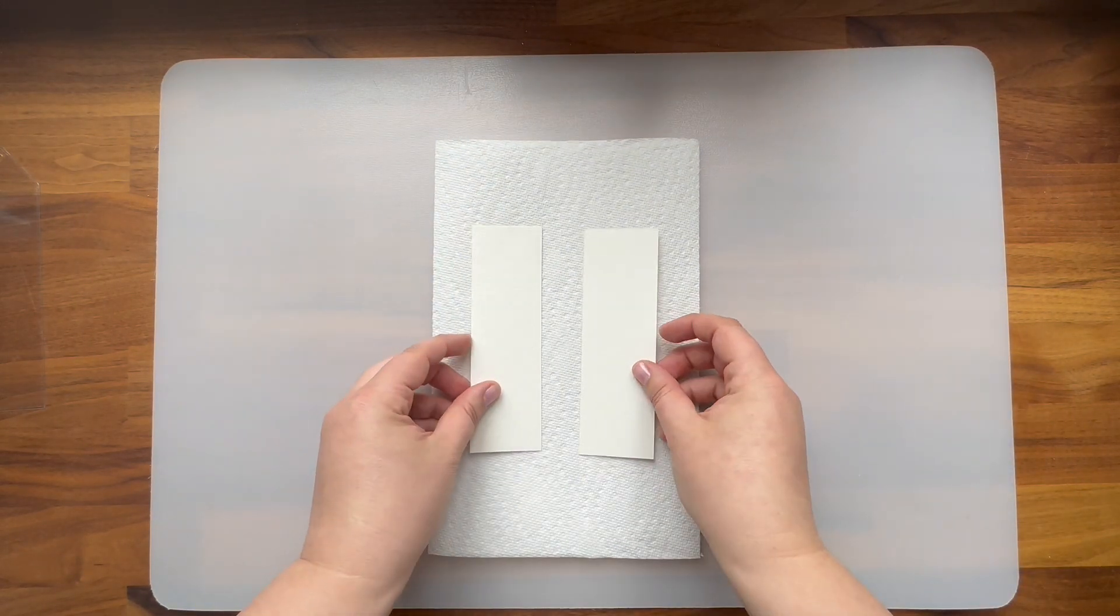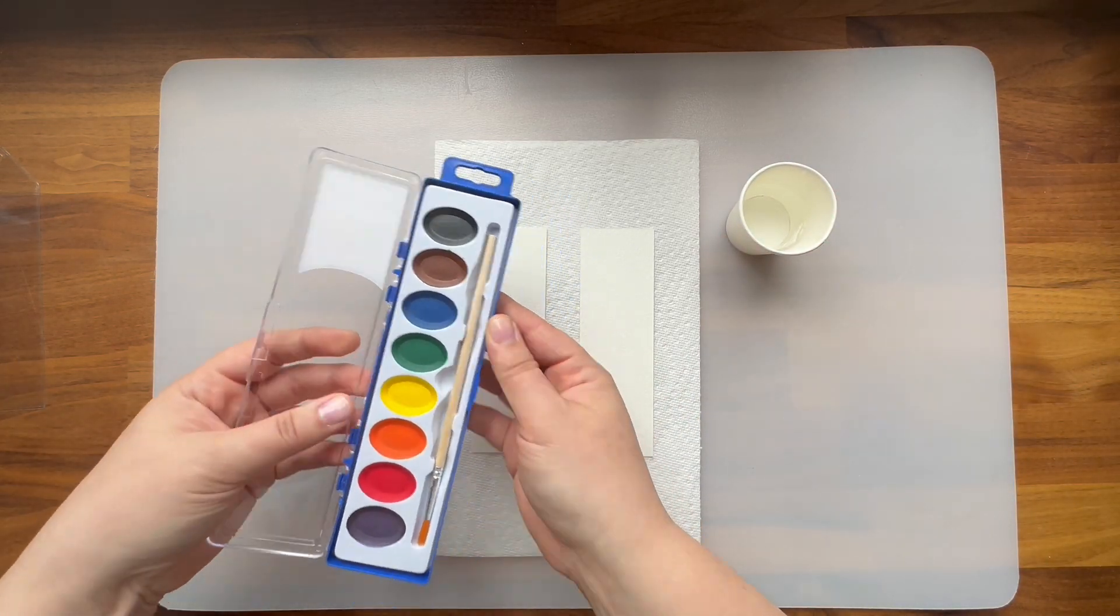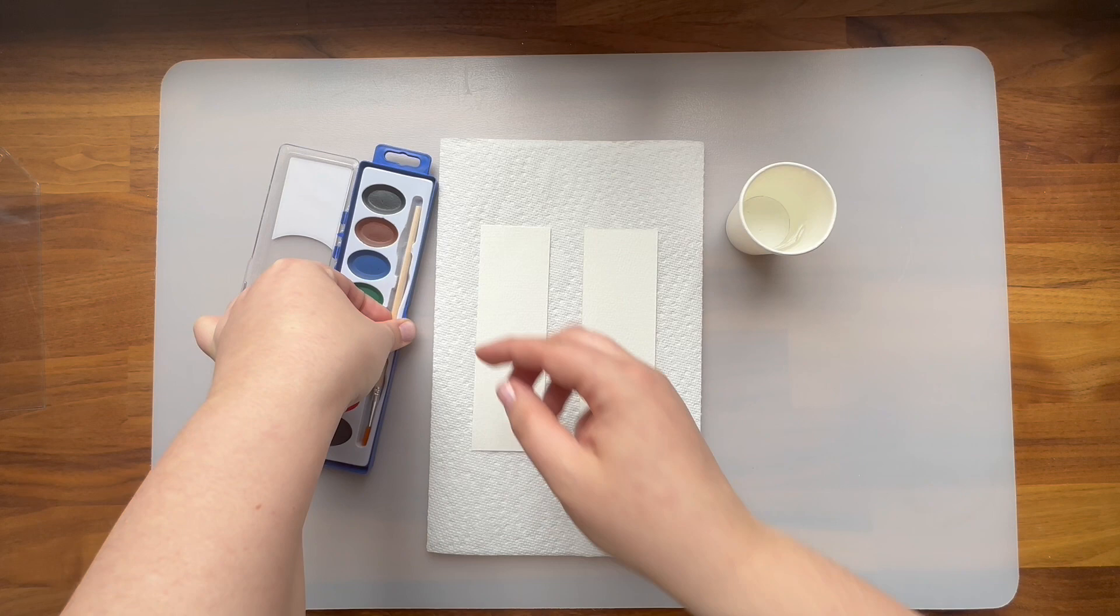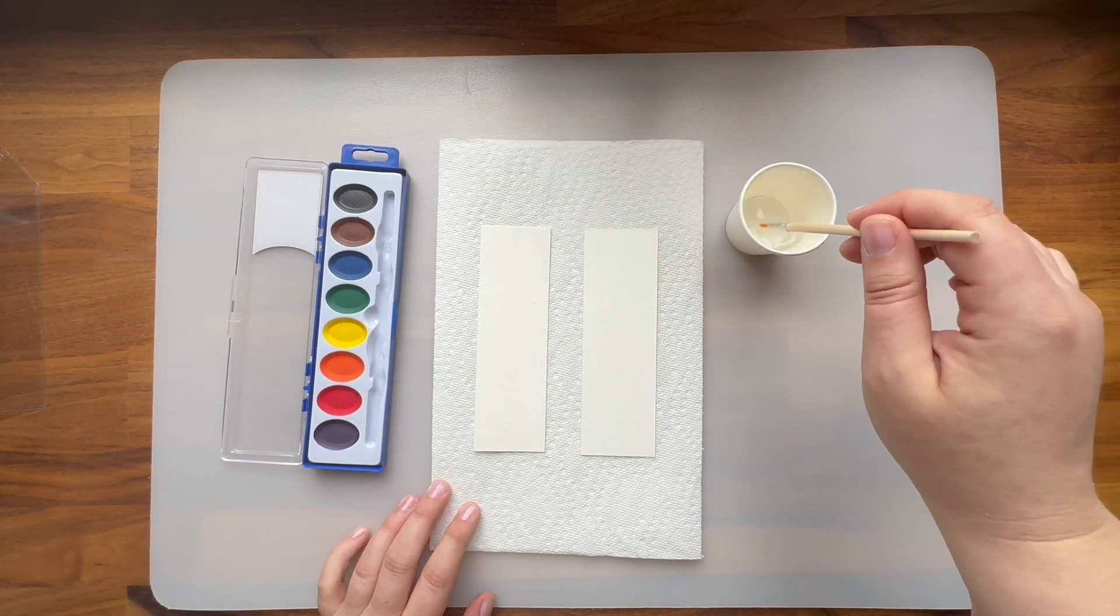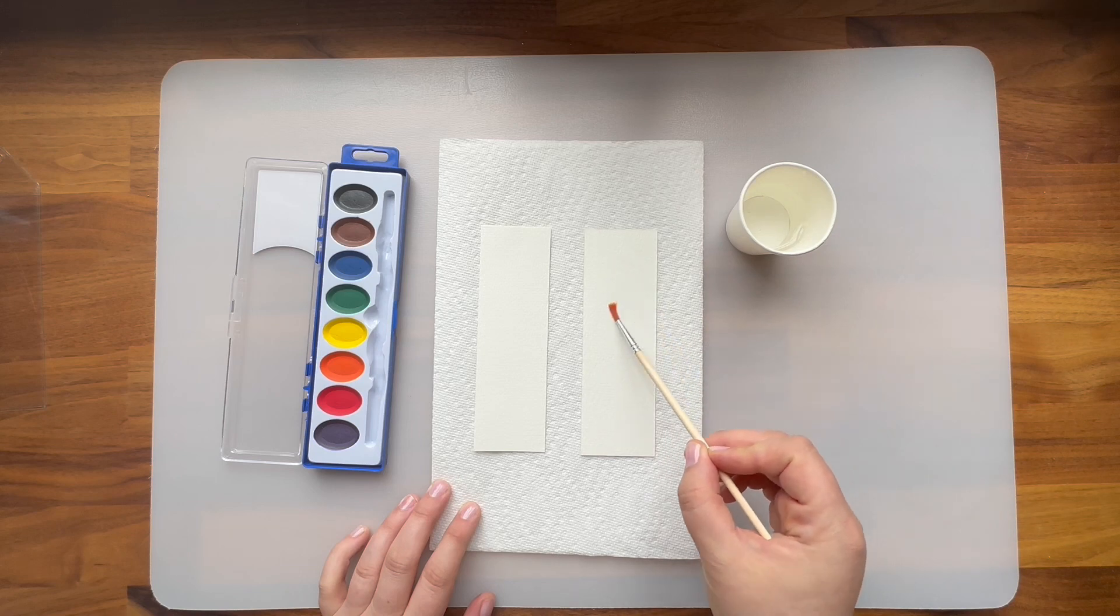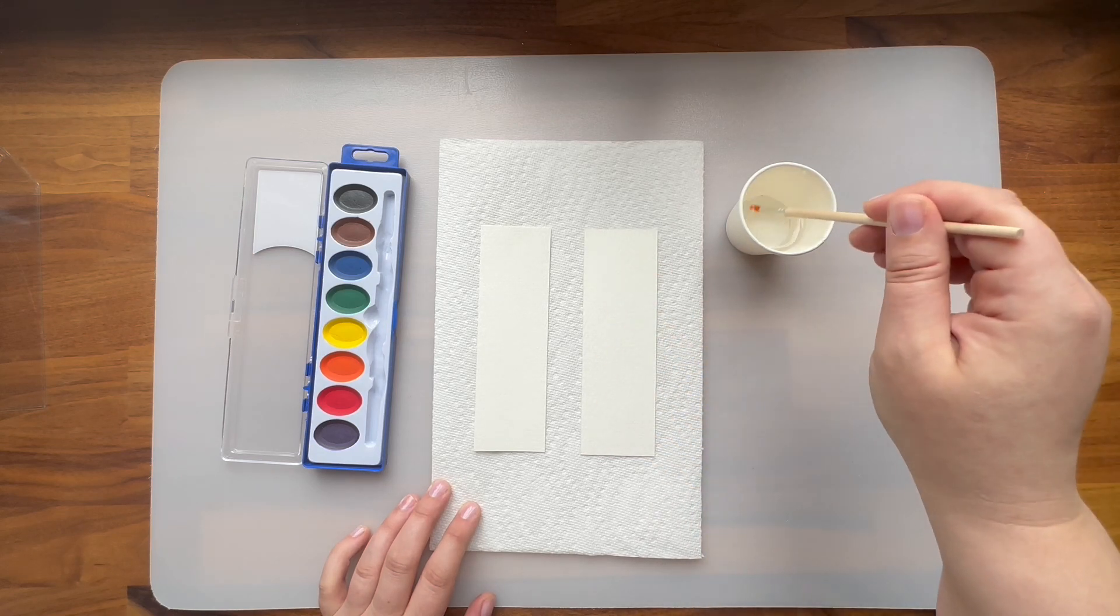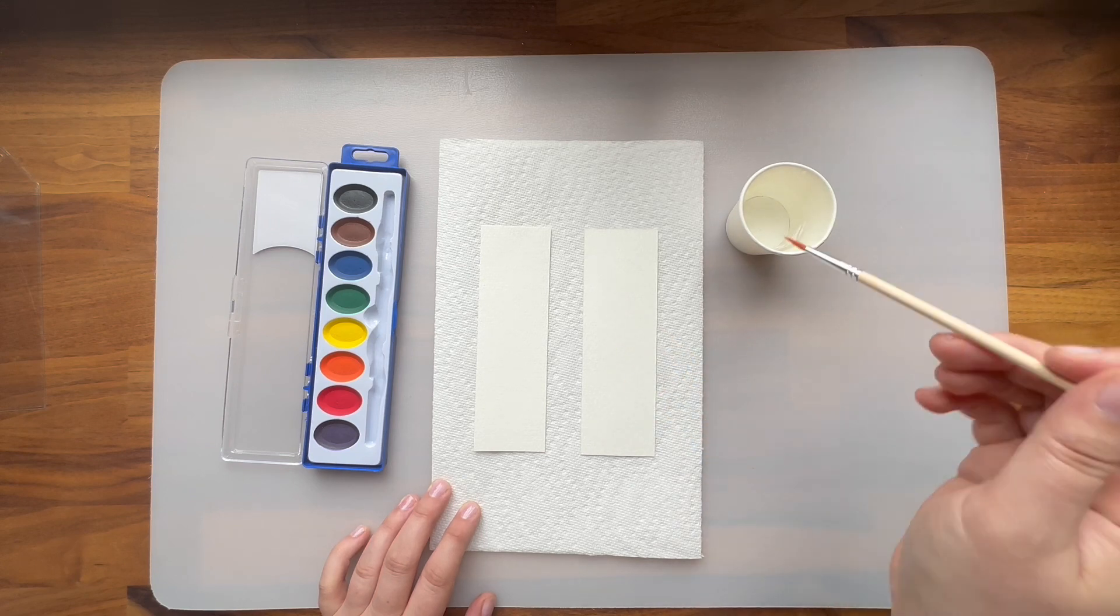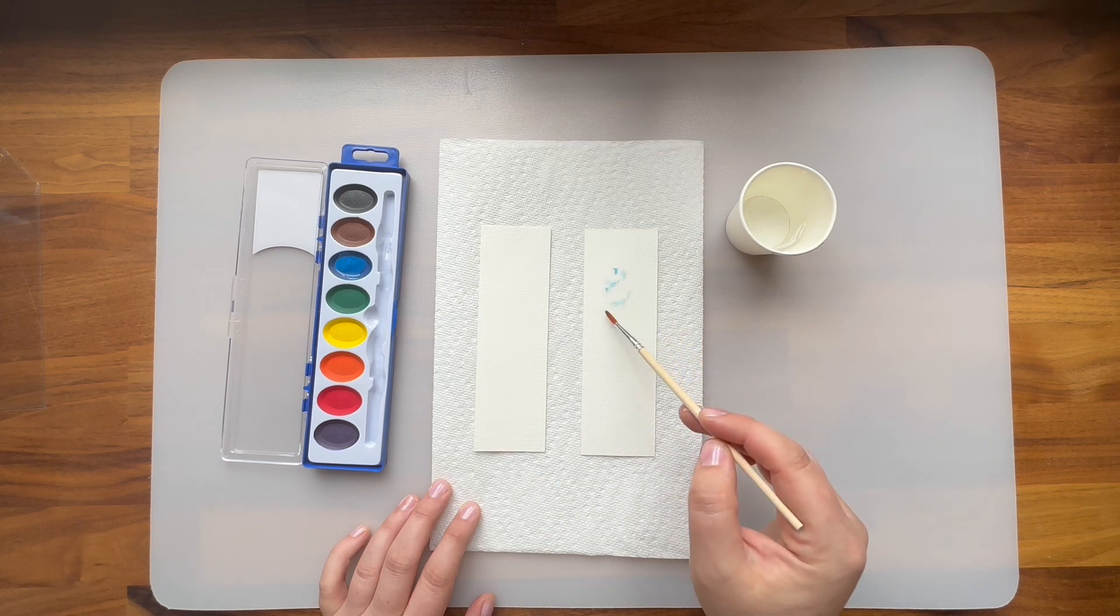Start by placing your watercolor bookmarks on a paper towel, then grab your palette and dip your brush into some water. Keep in mind during this project that there is no right or wrong way to watercolor paint. The technique I'm using here is to just add plain water to your bookmark to start, then you can add the pigment later.